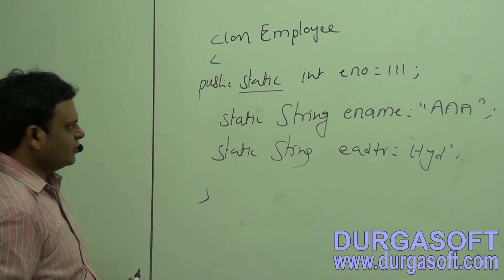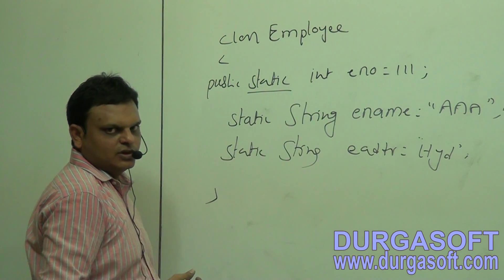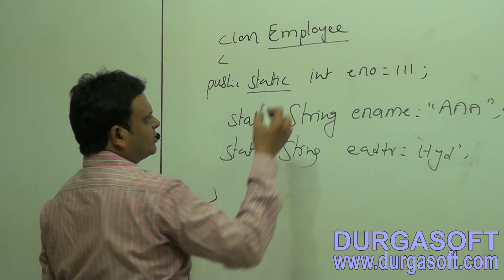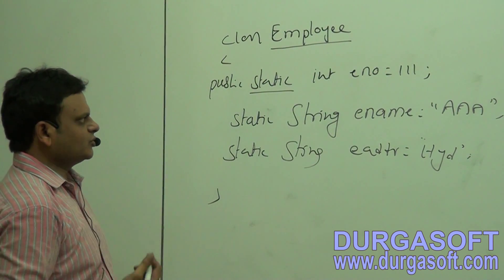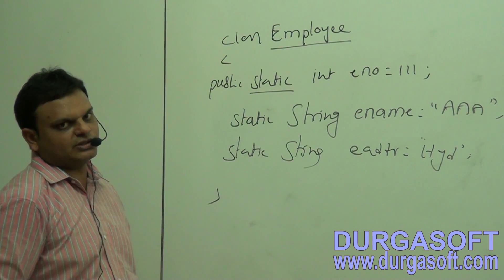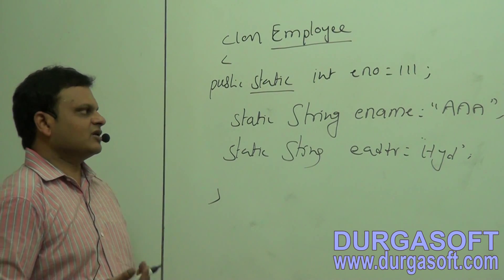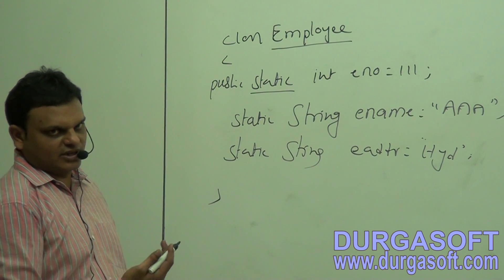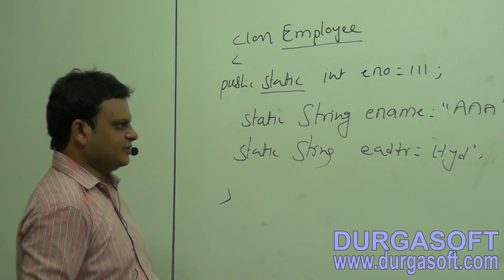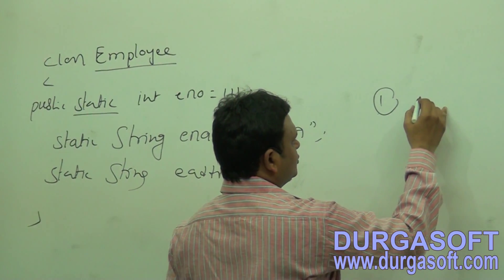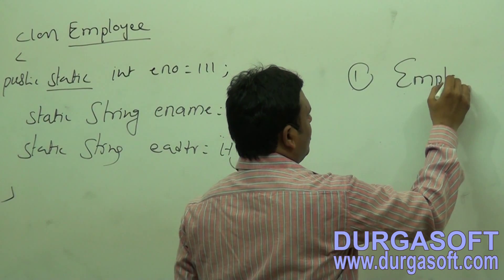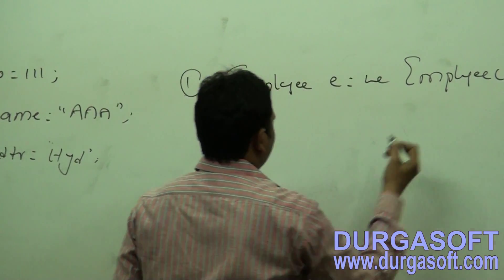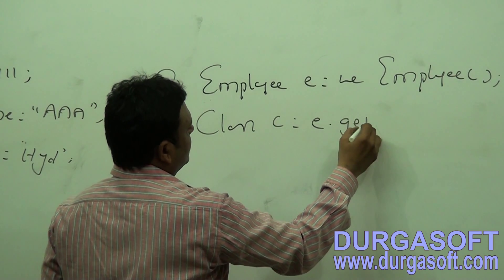My requirement is to get metadata of all the three variables. To get metadata of these three variables, first you have to prepare a class object with respect to the Employee class. There are three ways: Class.forName() method, getClass() method, and using dot class. So: Employee e = new Employee(); Class c = e.getClass();